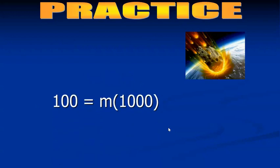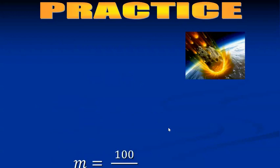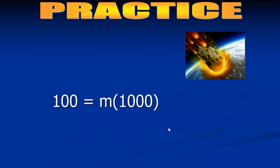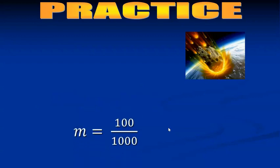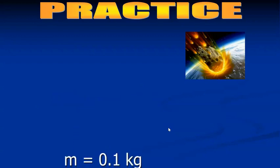Plug in our numbers. Momentum on the left and velocity on the right. To get rid of the 1000 and isolate the m, we're going to have to divide both sides by 1000. So that's how we got that. And then 100 divided by 1000 is just 0.1, 0.1 kilograms. So the mass is 0.1 kilograms.